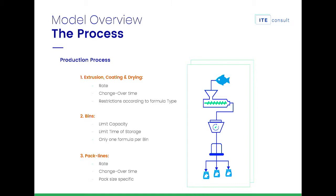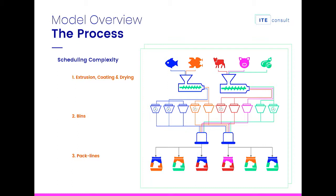The production process is separated into three steps. First: extrusion, coating and drying — which due to restrictions we group together. Second: the bins, which have restrictions including limited capacity, limited time of storage, and only one formula stored per bin. Third: the pack line, which has a production rate, a changeover time, and a specific pack size. All these are characteristics of any production line in the supply chain world, but each was meaningful for our problem.